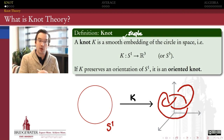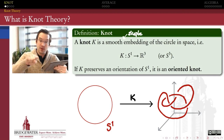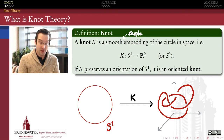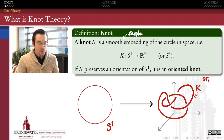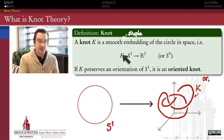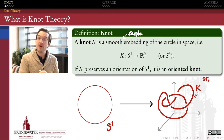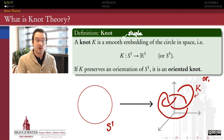Because it's the circle, unlike a knot that we tie in real life — which usually has two open ends we can use to untie it — our knots are going to close back in on themselves. We also tend to conflate the knot K with the image of that function inside three dimensions, so that we can treat it as a geometric object — a curve sitting inside of three-dimensional space.